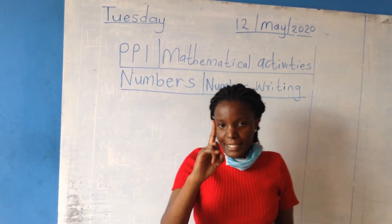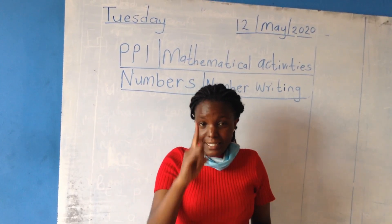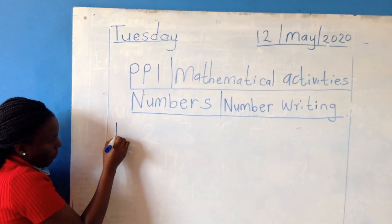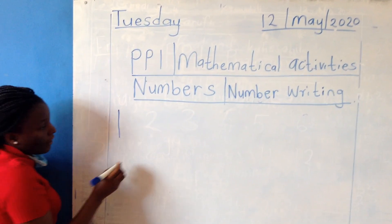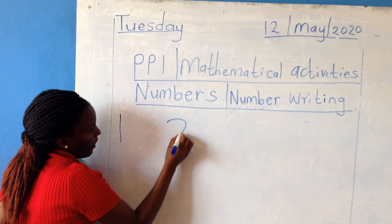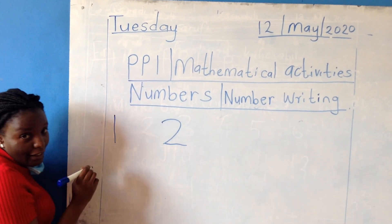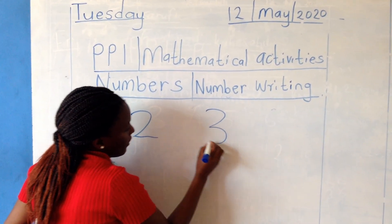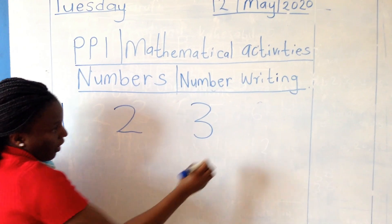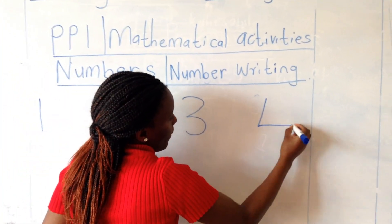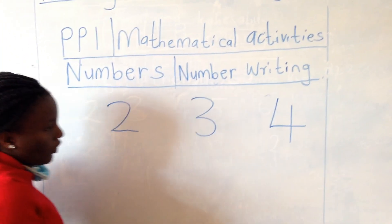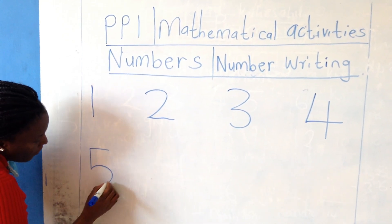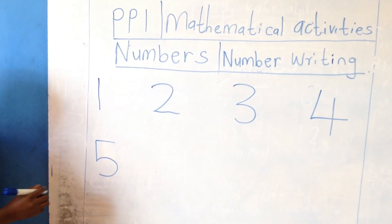Number one is like a stick. Number two is like a duck. Number three is like a butterfly. Number four is like a chair. Number five is like a fish.